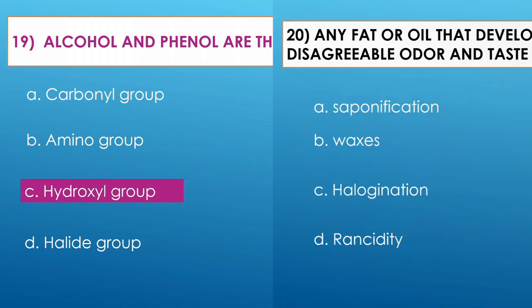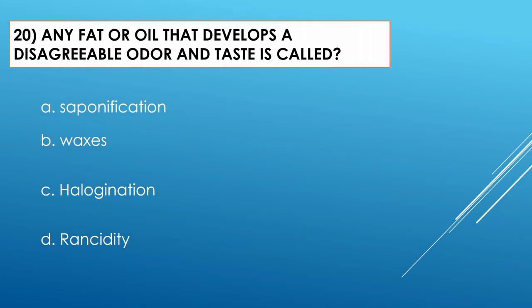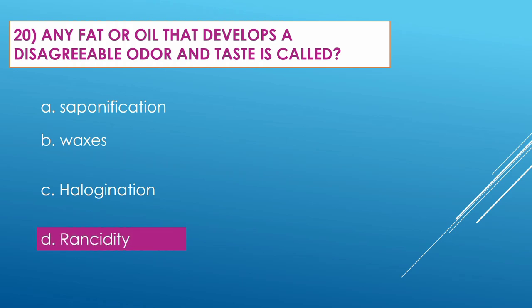Question number twenty: Any fat or oil that develops a disagreeable odor and taste is called — Option A: saponification. Option B: waxes. Option C: halogenation. Option D: rancidity. The correct option is rancidity.